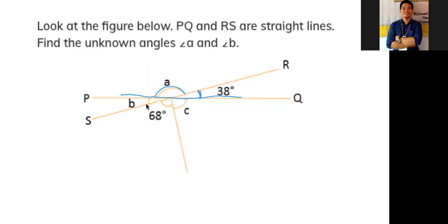If we recall that angles on a straight line equal 180 degrees, then to find angle a we subtract 38 from 180 degrees. Therefore, angle a is equal to 142 degrees.